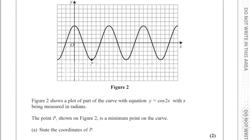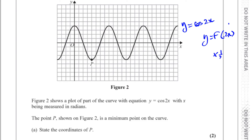The curve is y = cos(2x). This is a transformation taking place inside the function — it's of the form f(2x), where the x-values are all multiplied by a half. Any transformation inside the function affects the x-coordinates in the opposite way. If it were 2cos(x), the y-coordinates would be multiplied by 2, but here the y-coordinates stay the same and the x-coordinates are multiplied by a half.